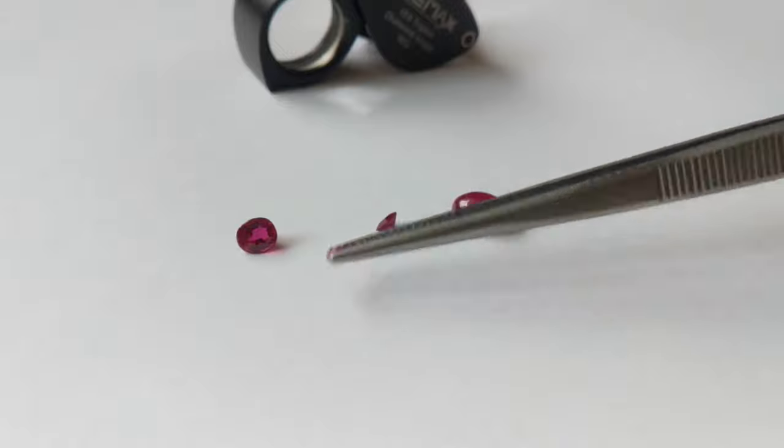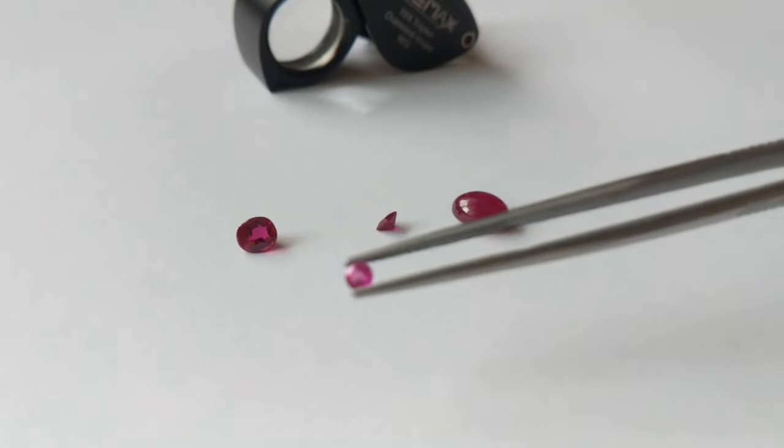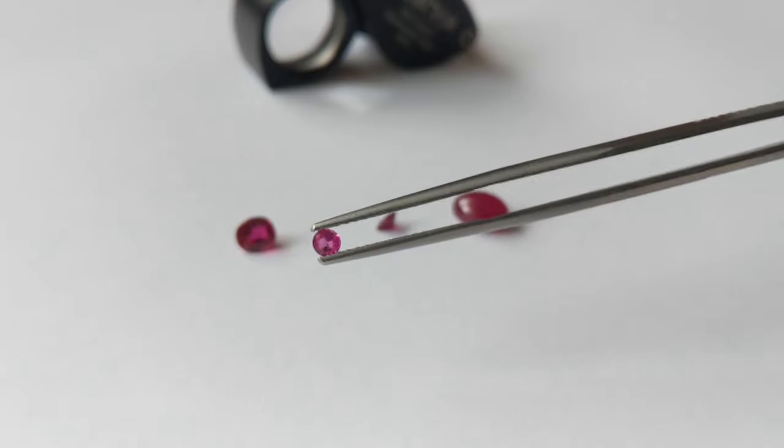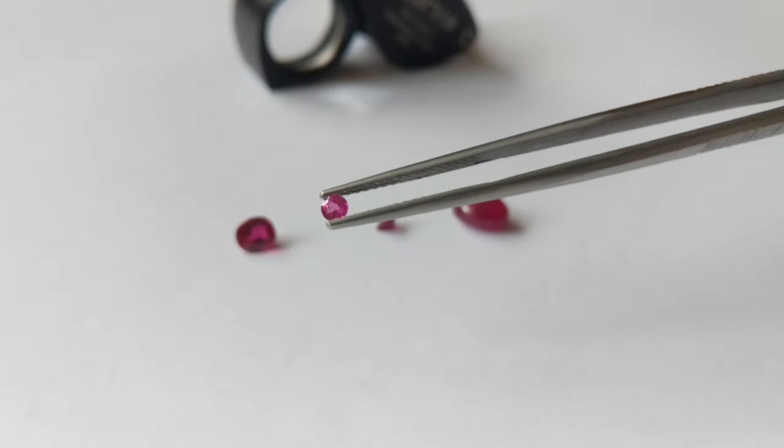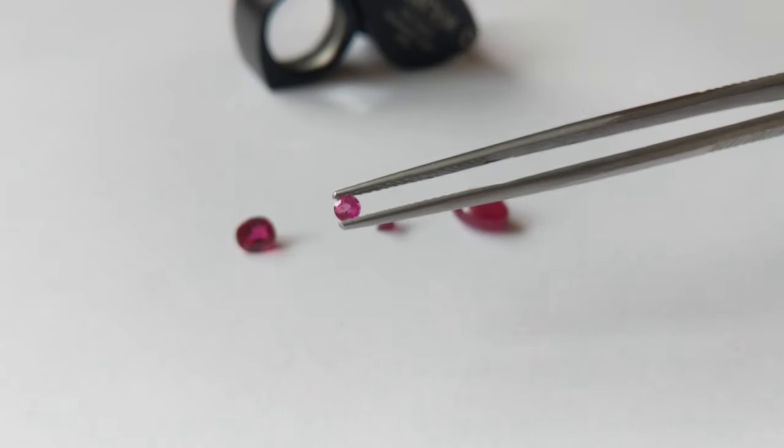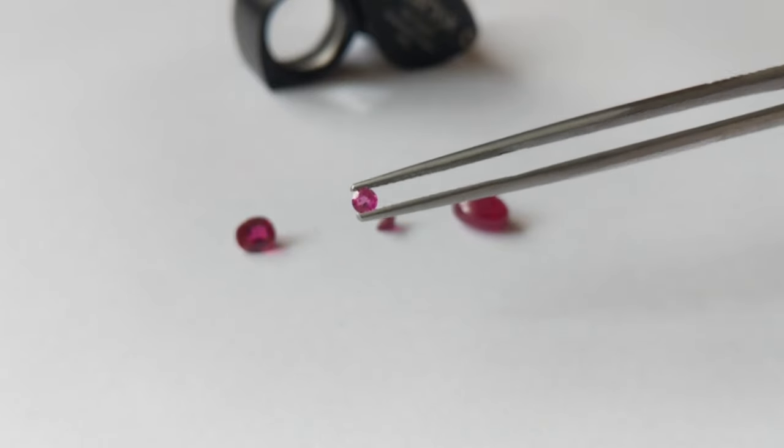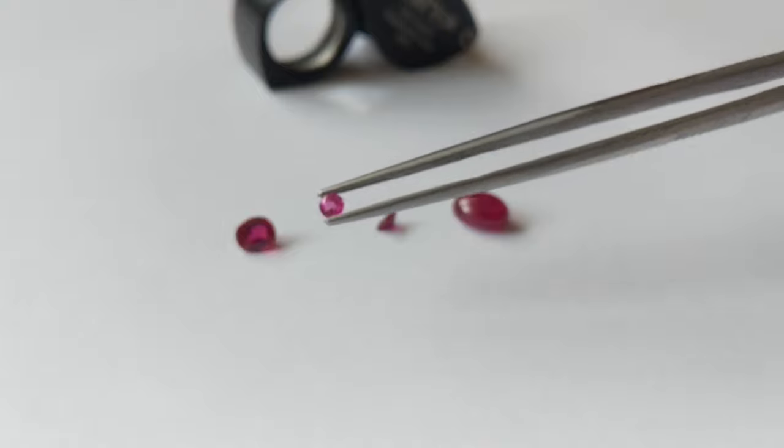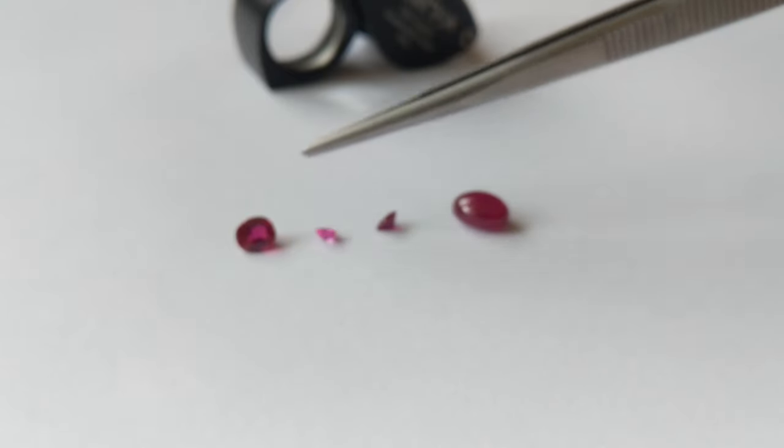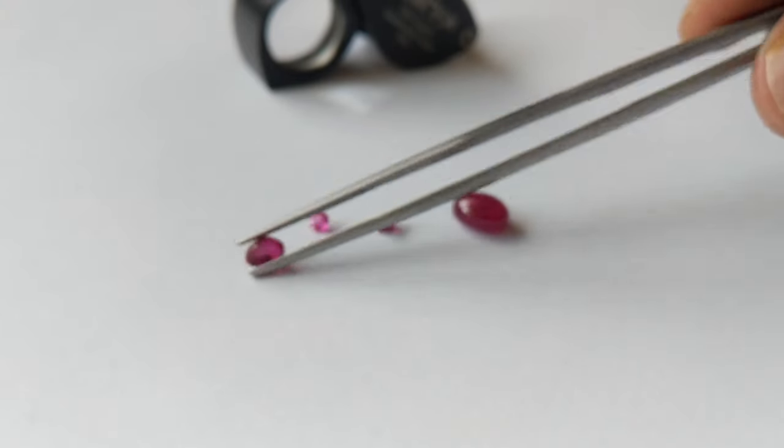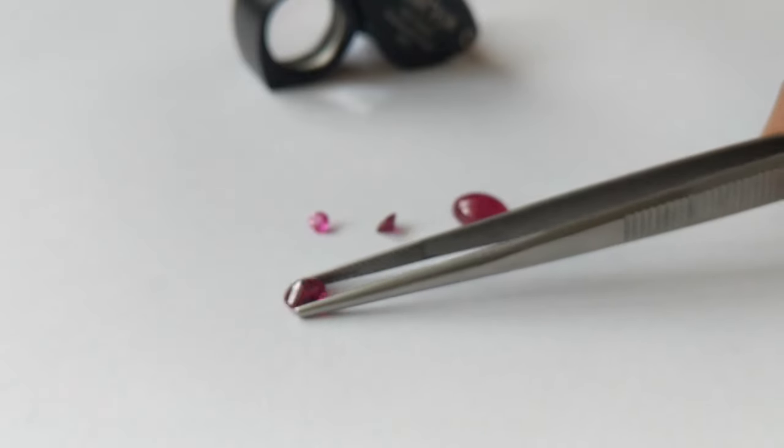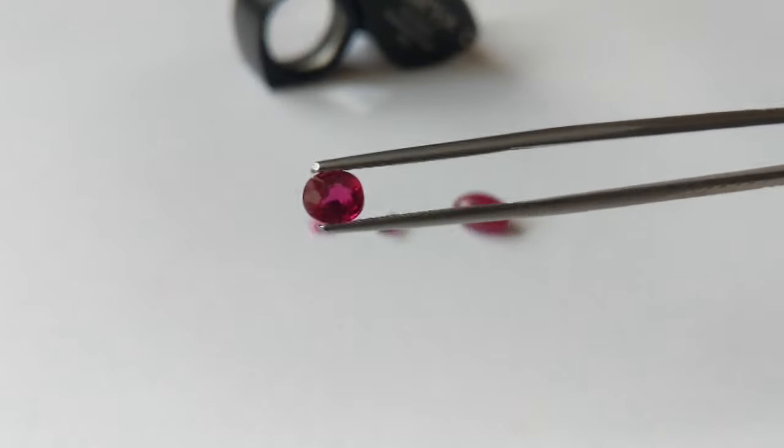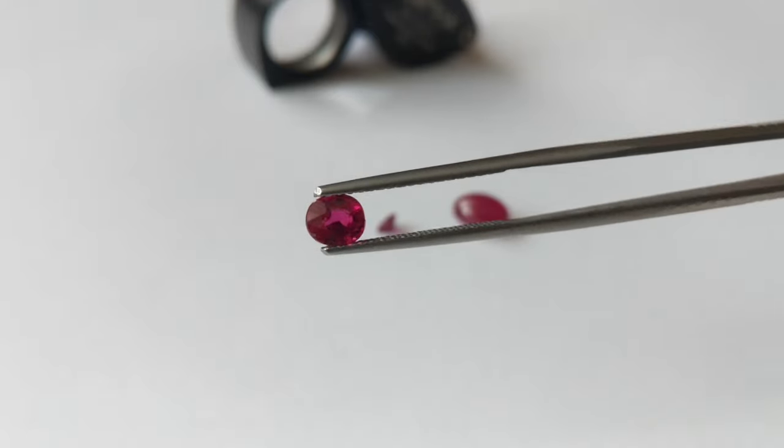Now let's see this third one right here. So the third one right here is a round two millimeter pinkish red, almost a pink sapphire, but it is still a ruby because the red is slightly more dominant color. So do you think this is synthetic or real?